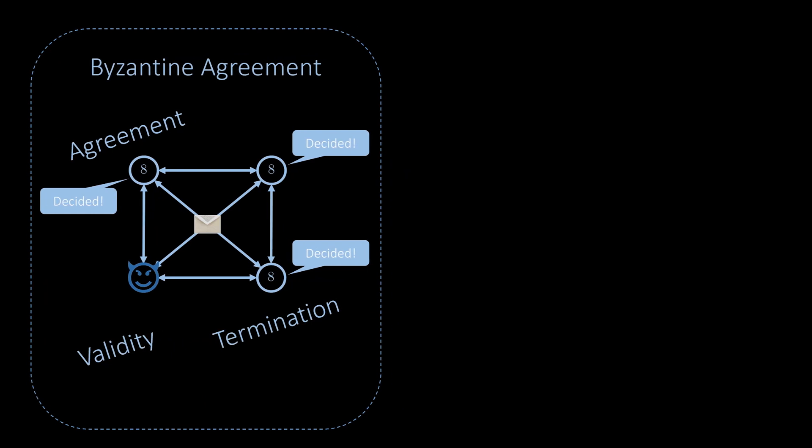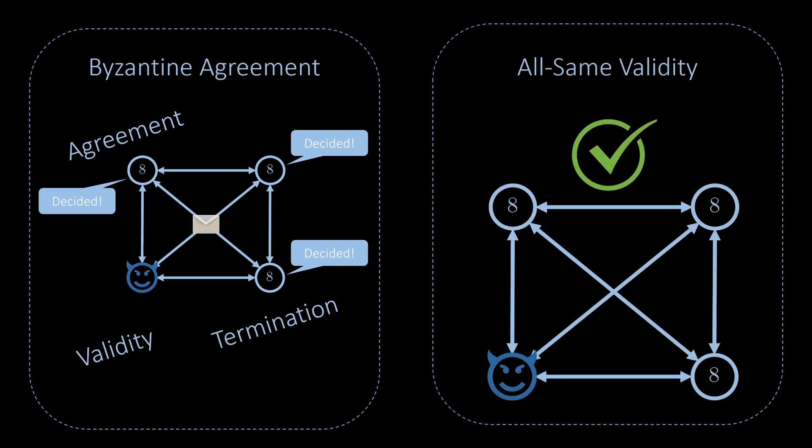We also learned that the validity property must be adapted. A reasonable choice is all same validity, which says that if all correct nodes start with the same value, the nodes must agree on this value. Thanks for watching.